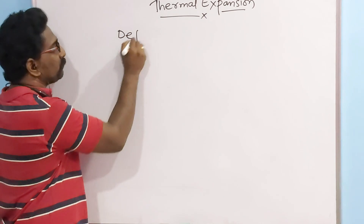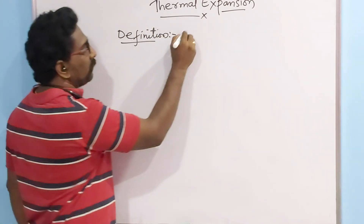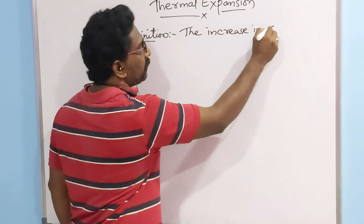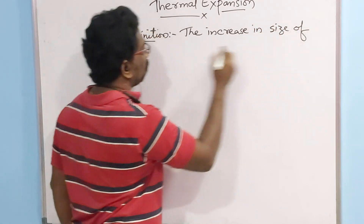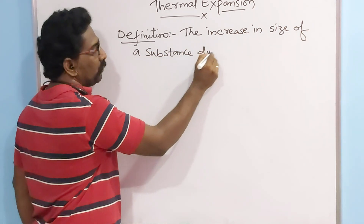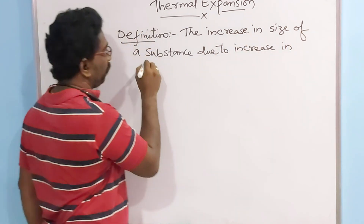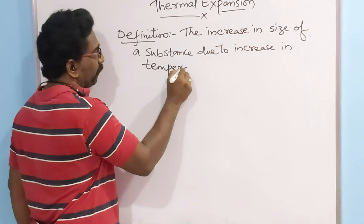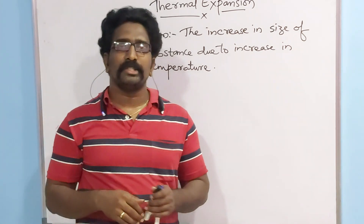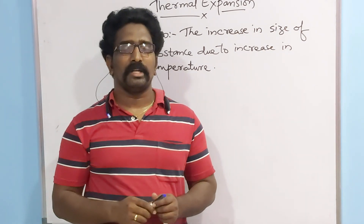The definition of thermal expansion is: the increase in size of a substance due to increase in temperature. Whenever a substance expands or increases in size due to increase in temperature, we call it as thermal expansion. So let us see the types of thermal expansion.